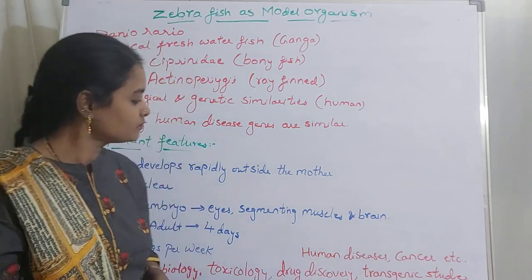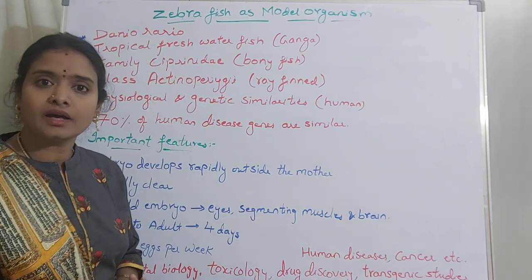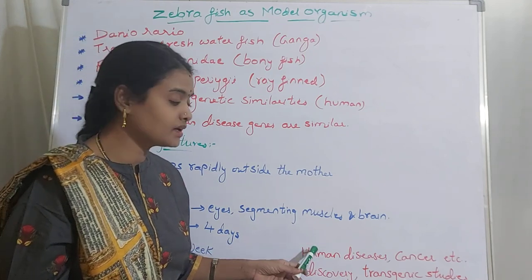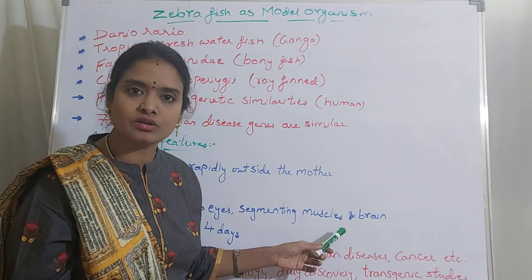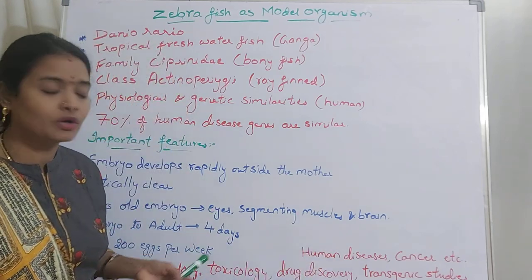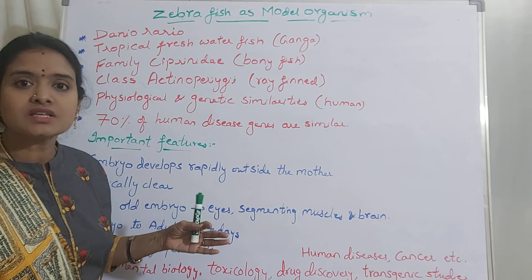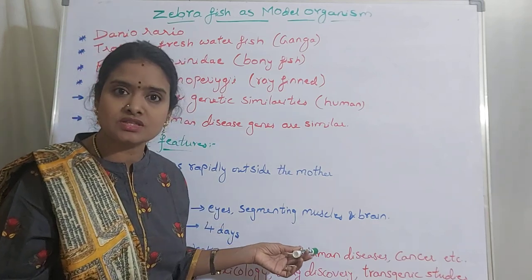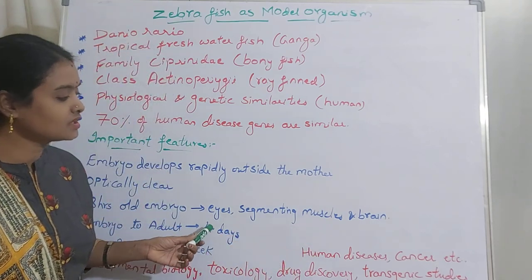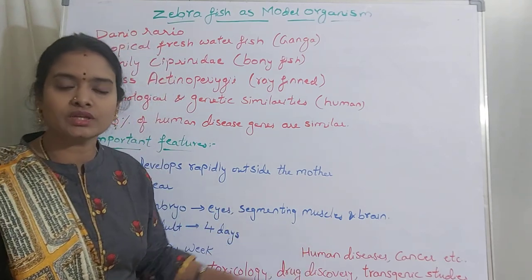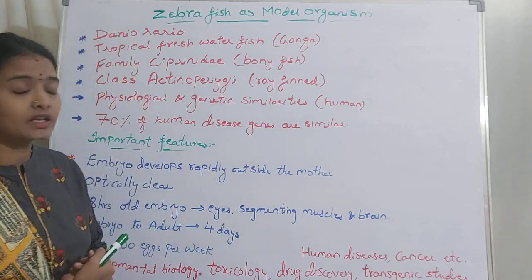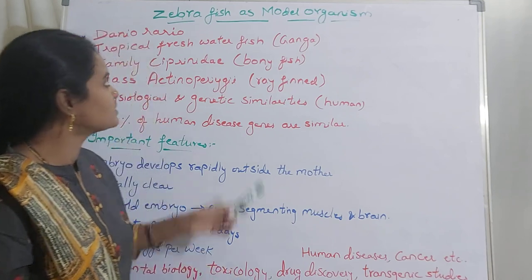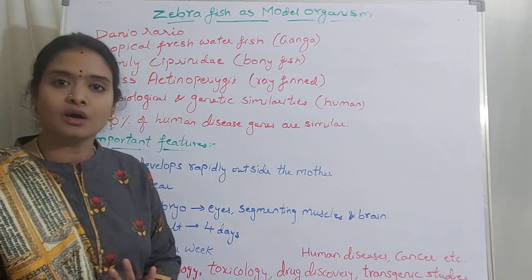Zebrafish share the same cardiac and valvular diseases, vascular system, digestive system, and metabolic system as humans — everything is more or less similar. They are also able to regenerate organs. All these features make the zebrafish an excellent model organism for research purposes.